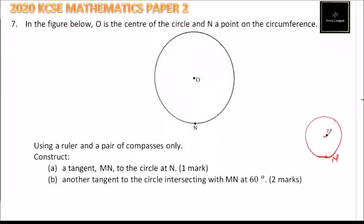To make a tangent, we are going to drop a line here. Then we can make a tangent by constructing an angle of 90 degrees there. From there, we are supposed to construct another tangent that makes an angle of 60 here.